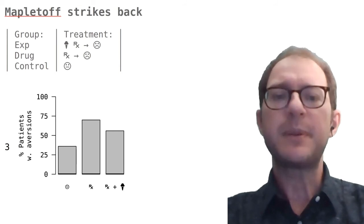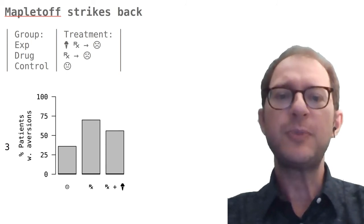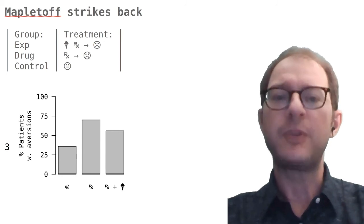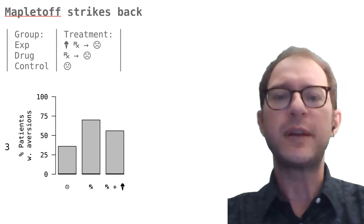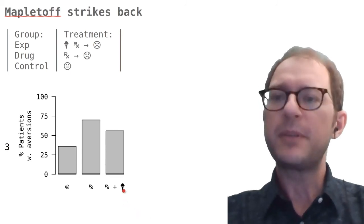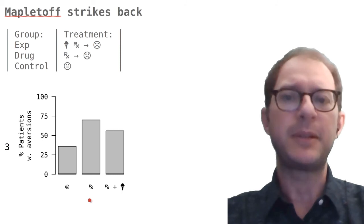That is, being in the experimental group of the Mapletoff study seemed to have a protective effect on the children's diet. The control group is telling us how many children changed tastes on their own, which is quite a few, about 30%, and it's important to know as the baseline for the other two groups. But the important result is that the experimental group, drug plus ice cream, developed fewer aversions than the drug alone group, and recall that these are aversions to the usual diet, not aversions to the ice cream in the Mapletoff study.